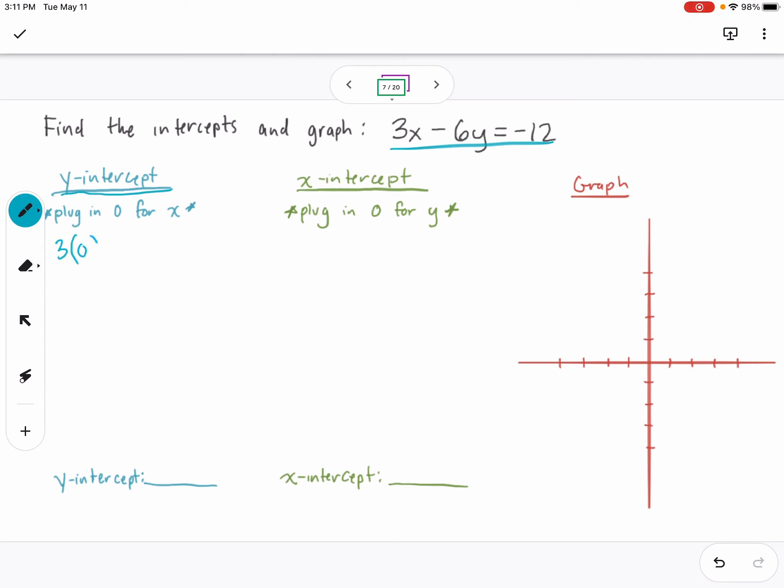So I'm going to write 3 times 0 minus 6y equals negative 12. Where did this 0 come from? I plugged in 0 for x, and then I'm going to find out the y value when x is 0. That will tell me where on the y-axis this line will hit.